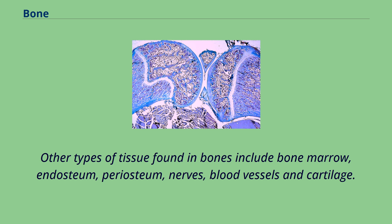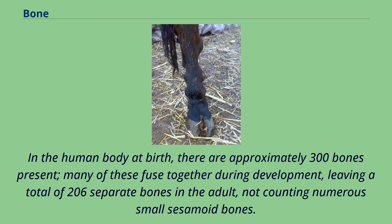Other types of tissue found in bones include bone marrow, endosteum, periosteum, nerves, blood vessels, and cartilage. In the human body at birth, there are approximately 300 bones present. Many of these fuse together during development, leaving a total of 206 separate bones in the adult, not counting numerous small sesamoid bones. The largest bone in the body is the femur or thigh bone, and the smallest is the stapes in the middle ear.